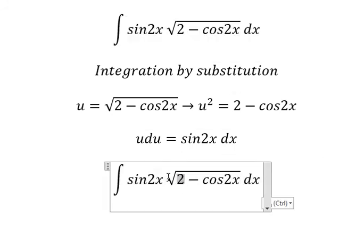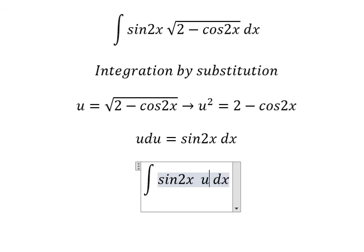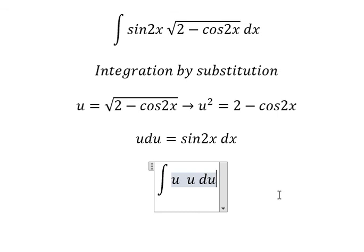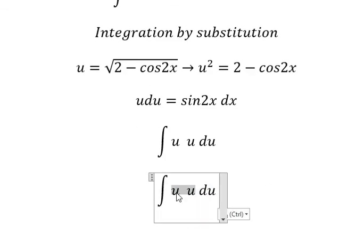This one we change for u. Sin 2x dx we change for u du and this one you get u squared.